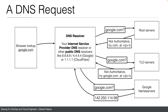The google.com name servers respond: yes, I have the IP address of google.com — I'm authoritative for this domain name. The DNS resolver then sends the IP address back to the browser. The resolver typically caches all these IP addresses; how long depends on the TTL (time to live) field that is passed. This TTL says how long records can stay in cache, so the resolver doesn't always have to go back to those servers.